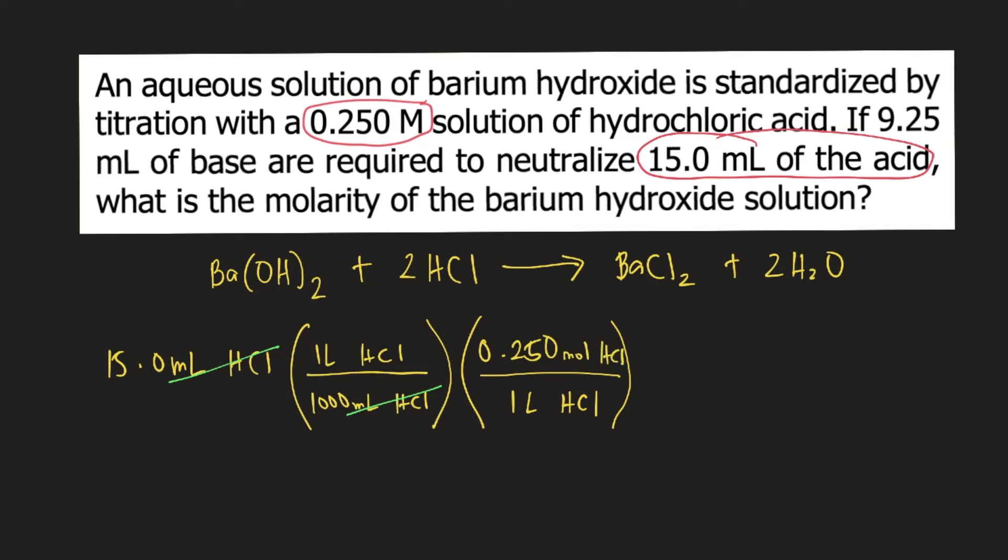The liters of HCl solution would cancel, and we have moles of HCl. Then we need to convert moles of HCl into moles of barium hydroxide.